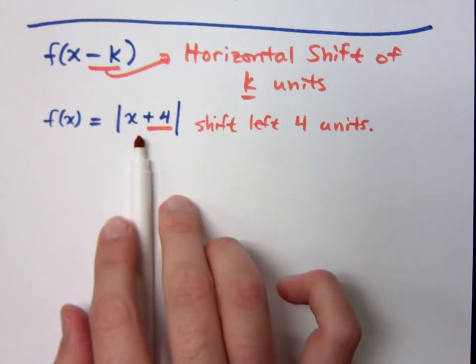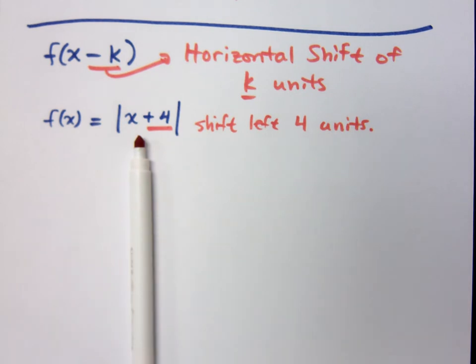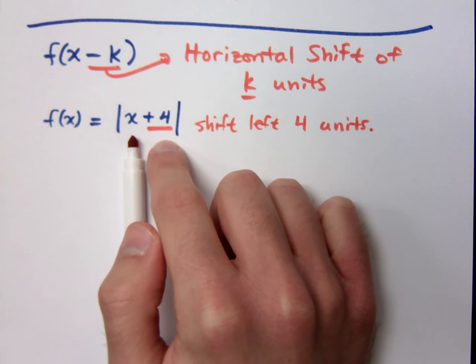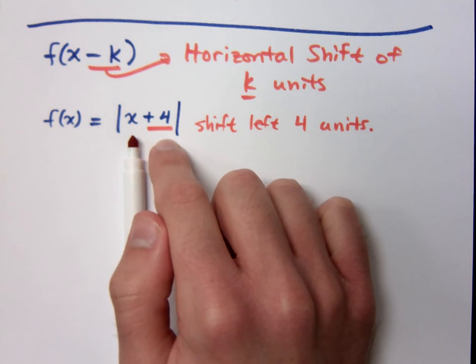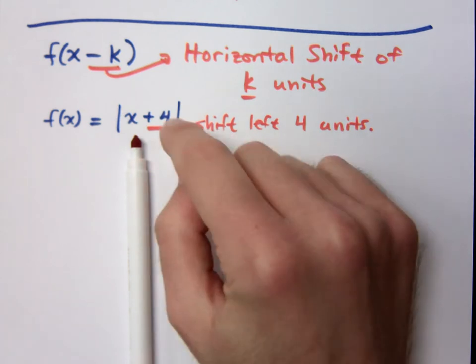And here's the way that I kind of think about it in my mind: this plus 4 means you get to start earlier. Where is your vertex on the absolute value function? At 0, 0. If I tell you that you get to start 4 units earlier, that means that vertex is now where? Negative 4. It's shifted over to negative 4, 0, because I'm giving you a head start.